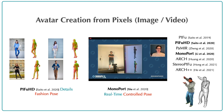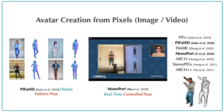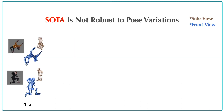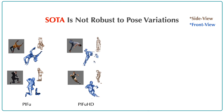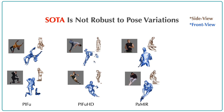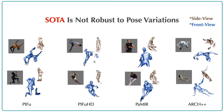They aim to recover scan-quality 3D reconstructions from just a single image. However, current state-of-the-art reconstruction algorithms — PIFu, PIFu HD, PaMIR, and ARCH++ — all fail on in-the-wild images with challenging poses. They are not robust to pose variations, resulting in broken or disembodied limbs, missing details, or non-human shapes.